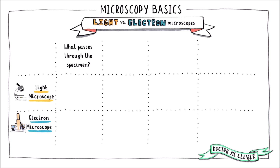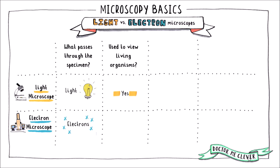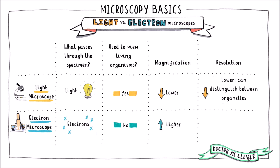To summarise the main differences: the light microscope passes light through a specimen whereas the electron microscope passes electrons through the specimen. The light microscope can study living cells or organisms, whereas the electron microscope requires dead cells or organisms. The magnification and resolution of a light microscope are both lower than that of an electron microscope. Light microscopes can distinguish between large organelles, however an electron microscope can distinguish between points within organelles and resolve much smaller structures such as ribosomes and plasmid DNA.